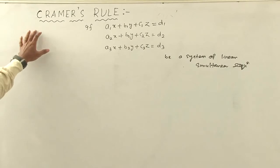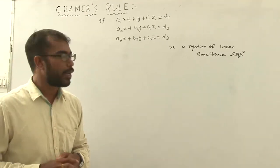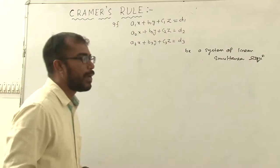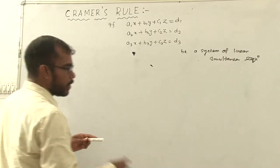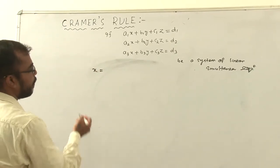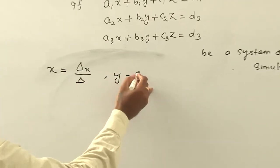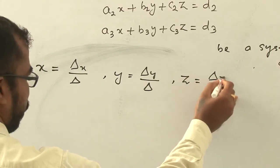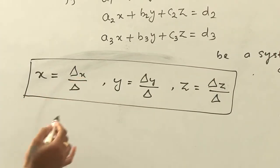According to Cramer's rule — actually, a mathematician Gabriel Cramer first introduced Cramer's rule. Here it is Cramer's rule. So we have to find out the value of x, y and z. Here, x is equal to Del x by Del, y is equal to Del y by Del, and z is equal to Del z by Del. So here is the formula to calculate.